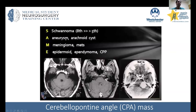Another example — more commonly than aneurysm — is an arachnoid cyst, a meningioma, and epidermoid. Those four are very common in this area.